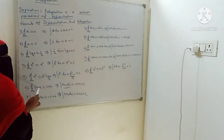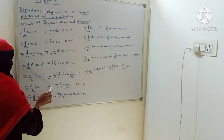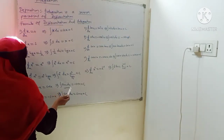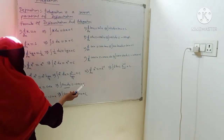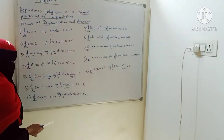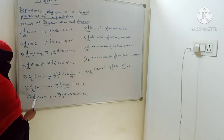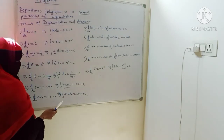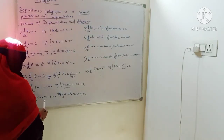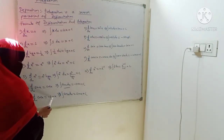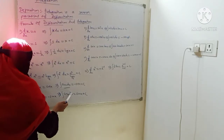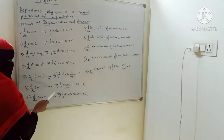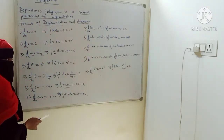d/dx of sin x is cos x. Integration of sin x dx is minus cos x plus C. d/dx of cos x is minus sin x. Integration of cos x is sin x plus C. This is very important.